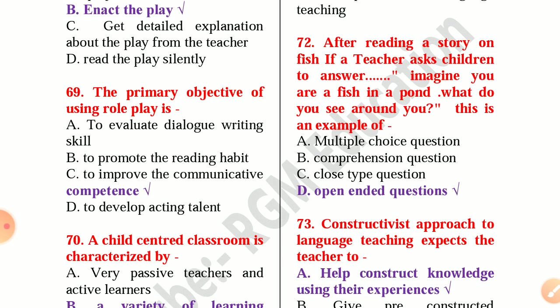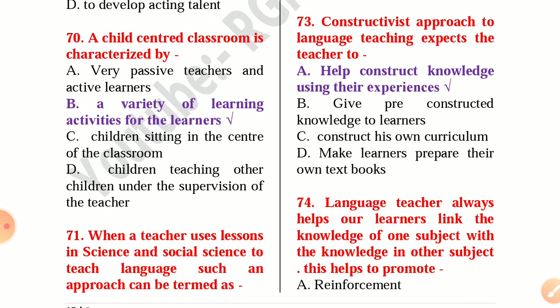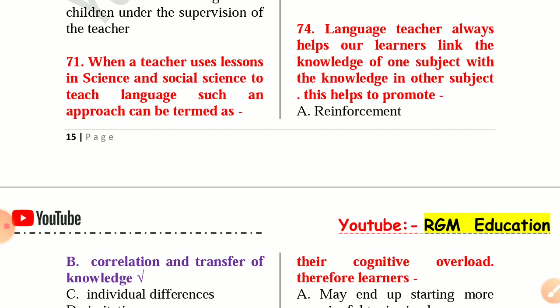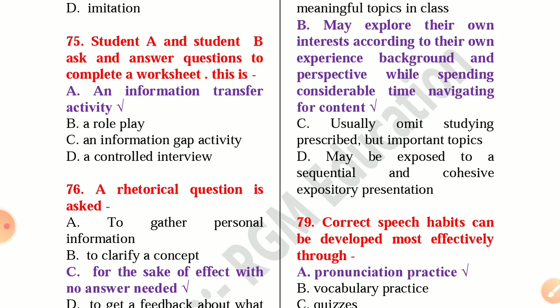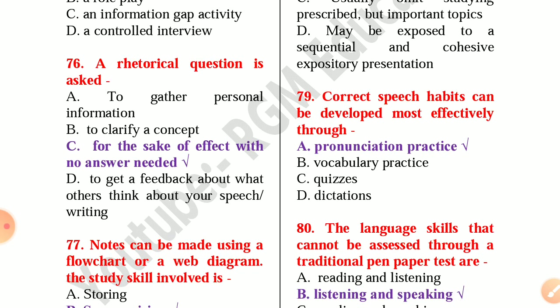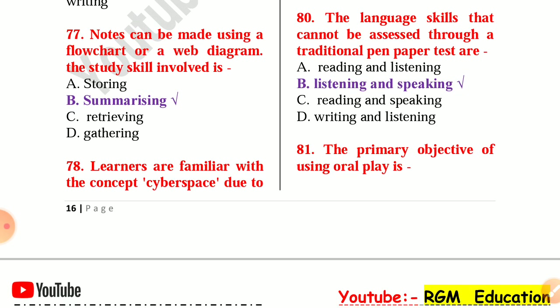Question 71: After reading a story on fish, if a teacher asks children to answer 'Imagine you are a fish in a pond — what do you see around you?', this is an example of an open-ended question. Question 72: The constructivist approach to language teaching expects the teacher to help construct knowledge using experience. Question 73: A language teacher helps learners link knowledge of one subject with knowledge in other subjects, promoting correlation and transfer of knowledge. Question 74: Student A and Student B ask and answer questions to complete a worksheet — this is an information transfer activity. Question 75: A rhetorical question is asked for the sake of effect with no answer needed. Question 76: Notes can be made using a flowchart or a web diagram — the study skill involved is summarizing.